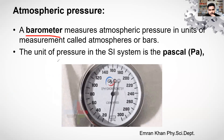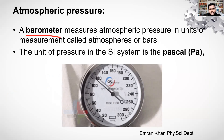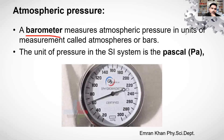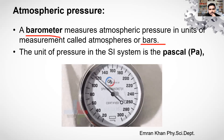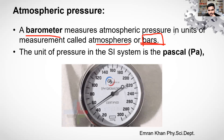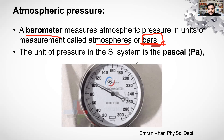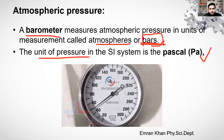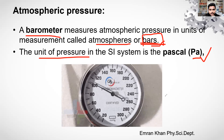The instrument used to measure atmospheric pressure is a barometer. The barometer measures atmospheric pressure in units called bars. In the SI system, the unit of pressure is pascal (Pa). This is what a barometer looks like.